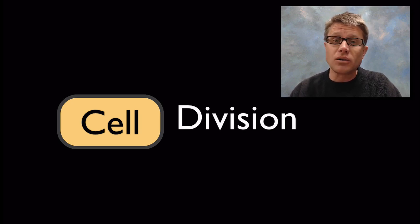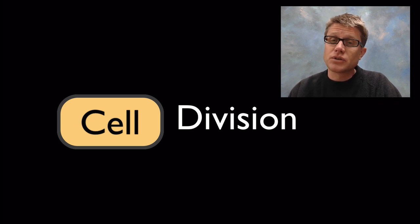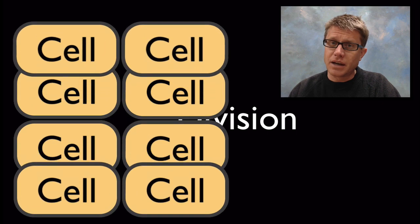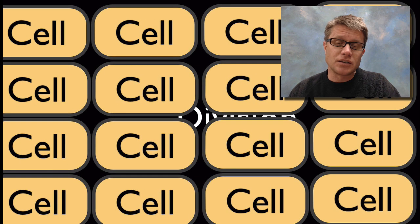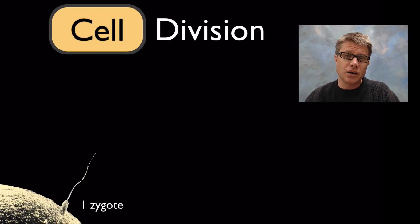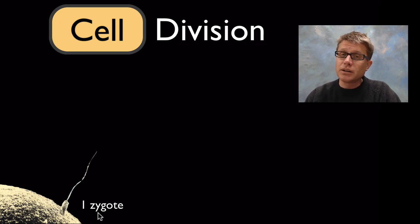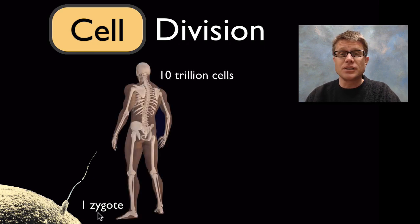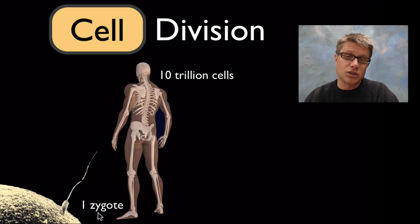Cell division occurs in all cells, both prokaryotic like bacteria and eukaryotic like you. Through cell division, one cell can become two, which can quickly become four, then eight, then sixteen — we get exponential growth. You started life as one fertilized egg, or one zygote, but those were quickly dividing over time and eventually created an adult with around ten trillion cells, all from that original cell.